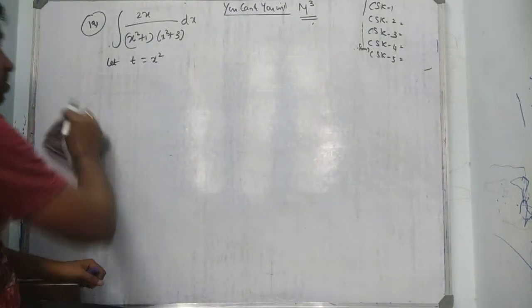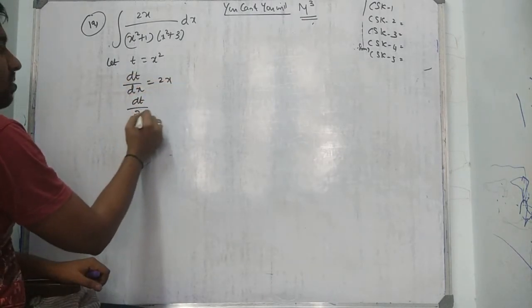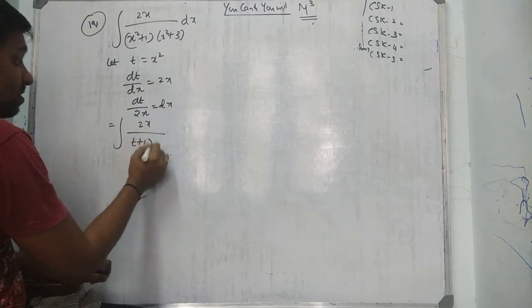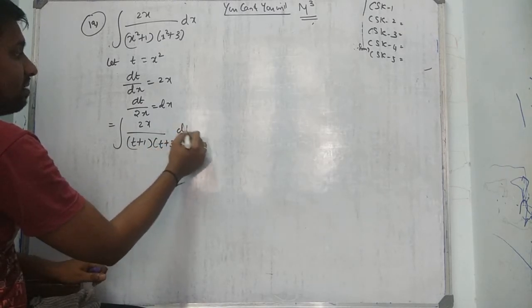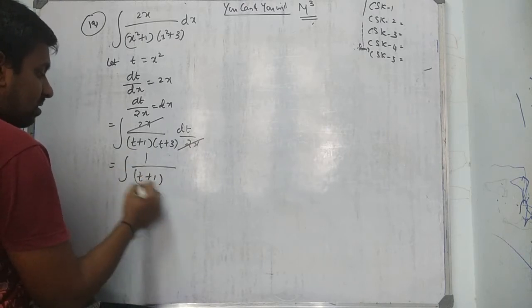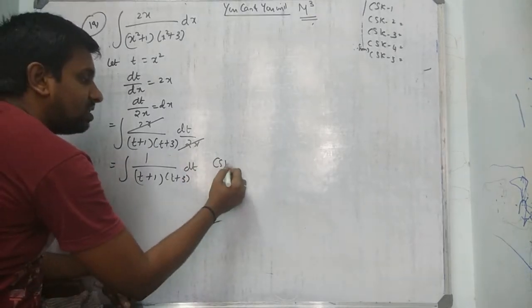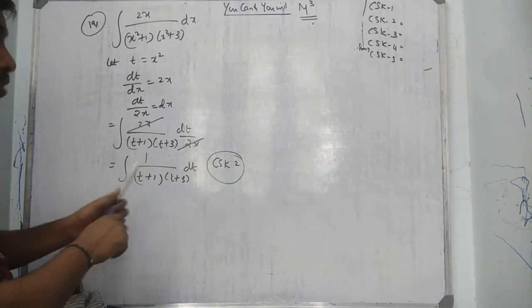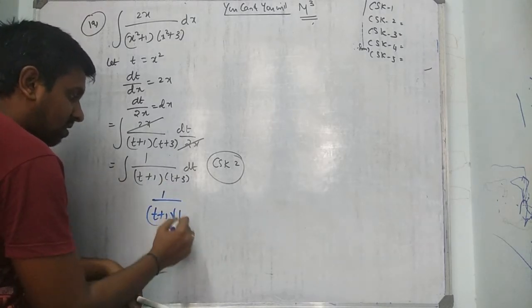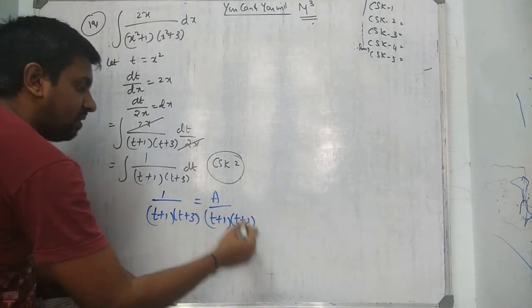So let me differentiate: dt/dx equals 2x, so dt/2x equals dx. Now change the question: 2x over (t + 1)(t + 3) times dt/2x — the 2x cancels. So we get 1 over (t + 1)(t + 3) dt. The question changes to a dt form — now this is CSK2.